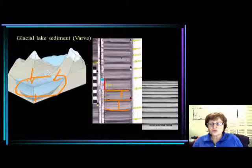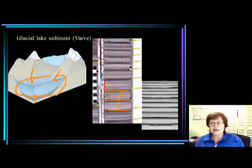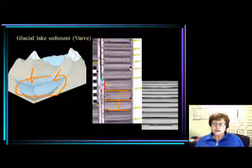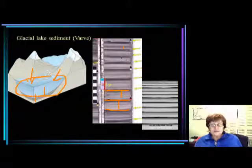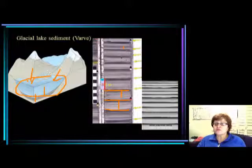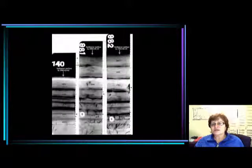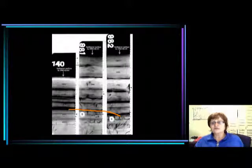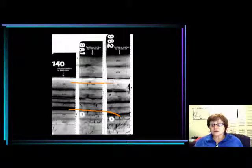Depending on the summer — if it was long and warm, there's more sediment; if it was short, there's less sediment coming in. These layers are like tree rings. It's an extremely good way to study lake sediments because you can tell the length and warmth of summers and coldness of winters, giving us paleoclimate information. This shows actual lake sediments correlated from three different places — you can really tell which was a long warm summer and which was a short summer.